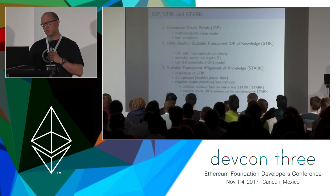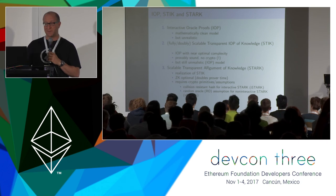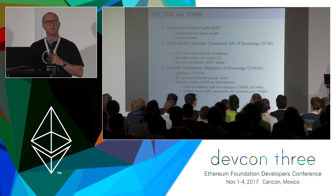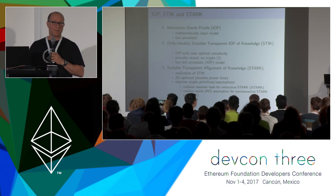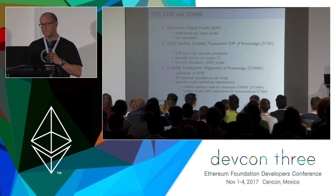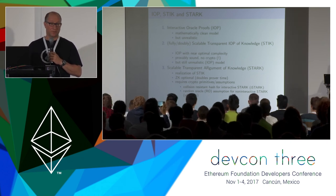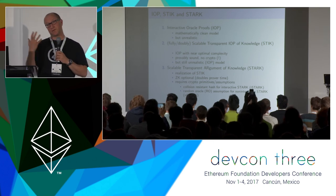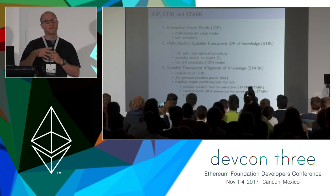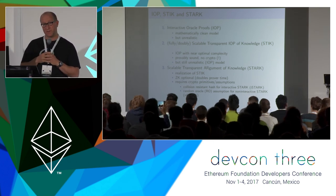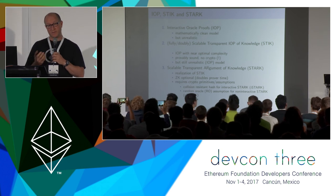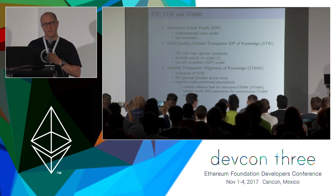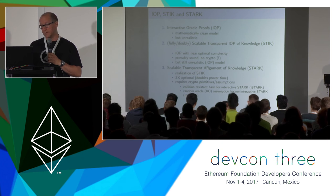And then if you go and realize them, and realize such a system, you get something that is practical. You do need cryptographic assumptions, but very lean ones — ones that are post-quantum secure. They don't have any number theory involved in them, they don't require a trusted setup. That's how you get a STARK in the end.